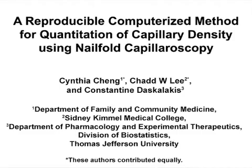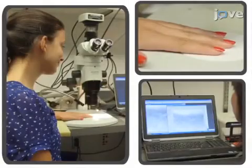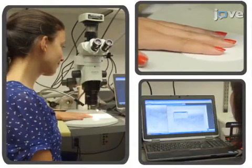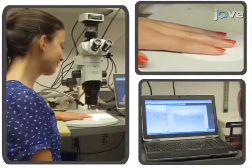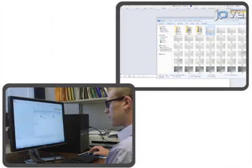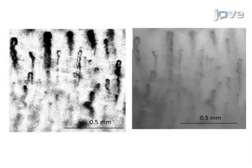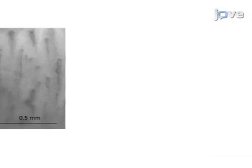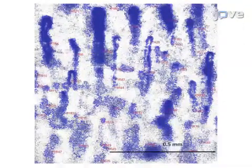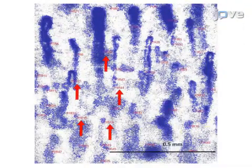The overall goal of this procedure is to quantify the number of capillaries per square millimeter in the area of skin directly below the nail cuticle. This is accomplished by first taking a monochrome picture of the fingernail bed below the cuticle. The second step is to import the image into a computer imaging program. Next, the images are manipulated to better visualize the capillaries. The final step is to identify and count all of the capillaries within one square millimeter.